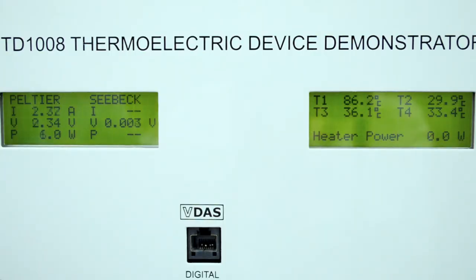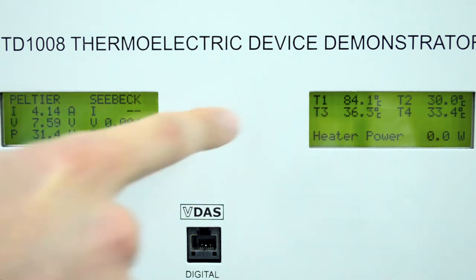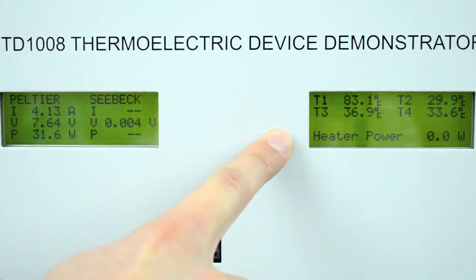Clear multi-line digital displays show all the temperatures and electrical measurements around the device such as voltage, current and power.